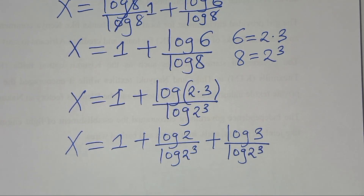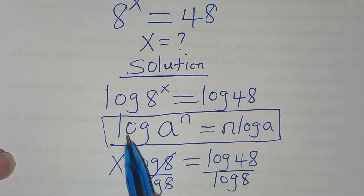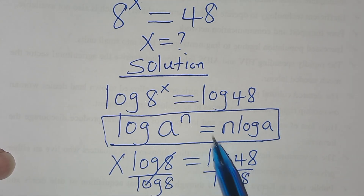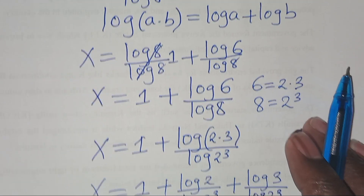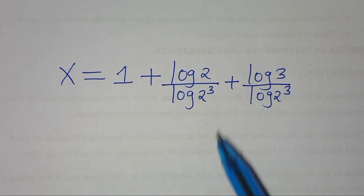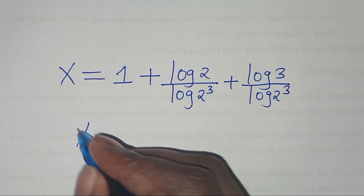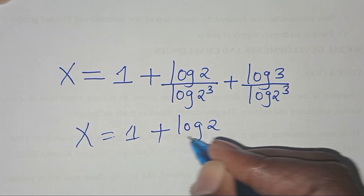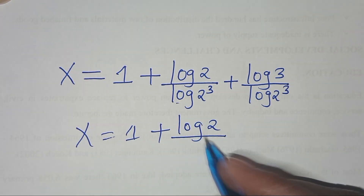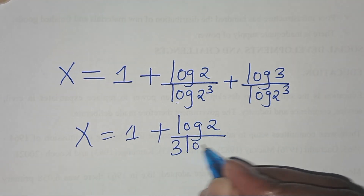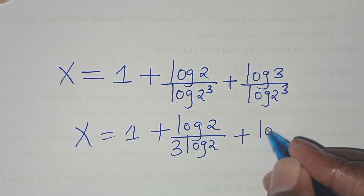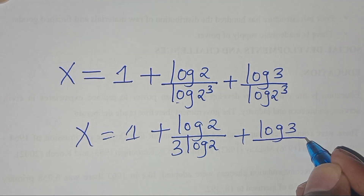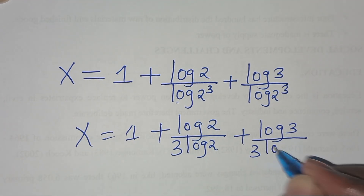Now, ln(2^3) is in the form of ln(a^n), which we can express as n·ln(a). Applying the power property, ln(2^3) becomes 3·ln(2), so that x is equal to 1 plus ln(2) divided by 3·ln(2), plus ln(3) divided by 3·ln(2).